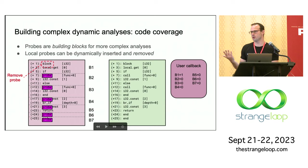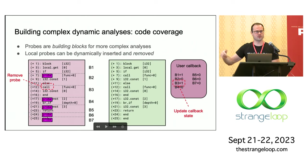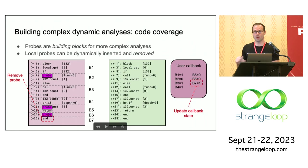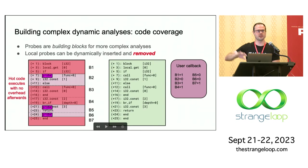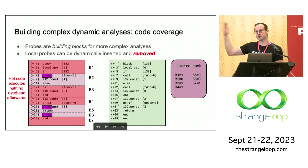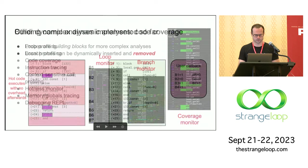Once that probe is removed, it will never execute again — it will have no overhead the next time. As the program executes, it fires the probes as it hits them newly and updates the state. Eventually we get to a point where all the blocks that have been executed have removed their instrumentation and recorded that they've been executed. That means the hot part of the program is eventually going to get compiled by a JIT compiler with no overhead at all. We asymptotically approach the performance you would have, by things removing their instrumentation as they go along. Most systems can't actually remove instrumentation once it's been inserted — this is one of the reasons why you might want to support that.